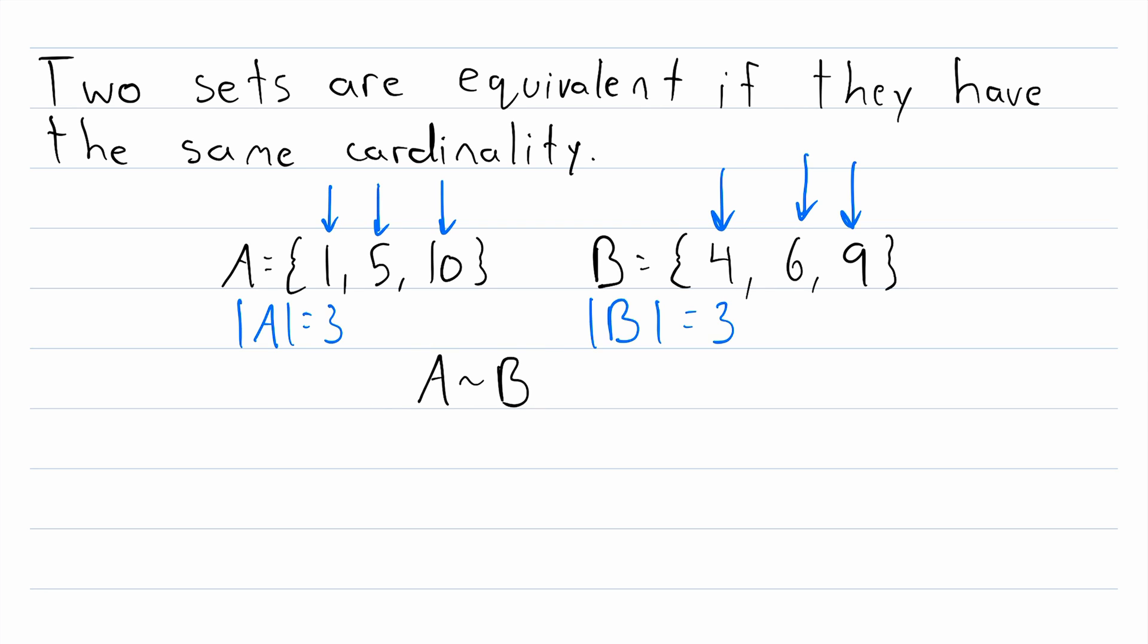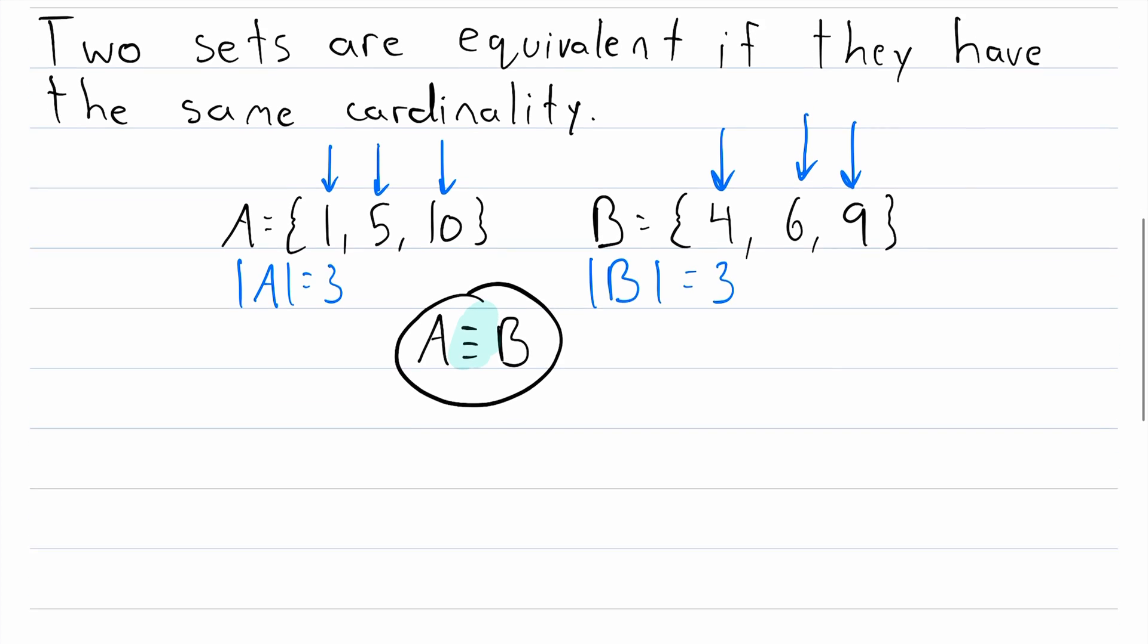Or you might also sometimes see set equivalents written like this. An equal sign but with three lines. And that's really all there is to it, so it's not very complicated.